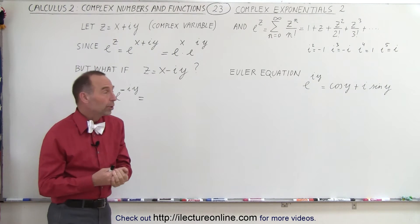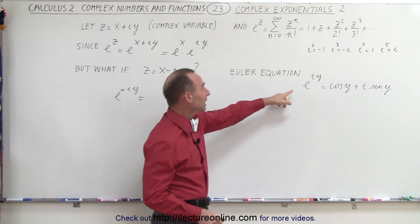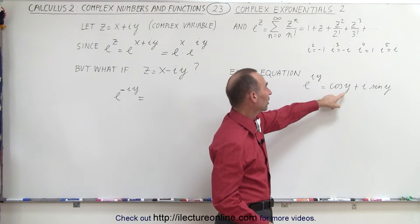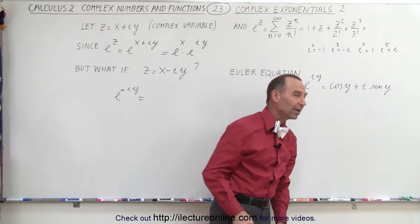And then we ended up with the Euler equation that showed us that e to the iy can be decomposed into the sum of the cosine of y plus i times the sine of y.